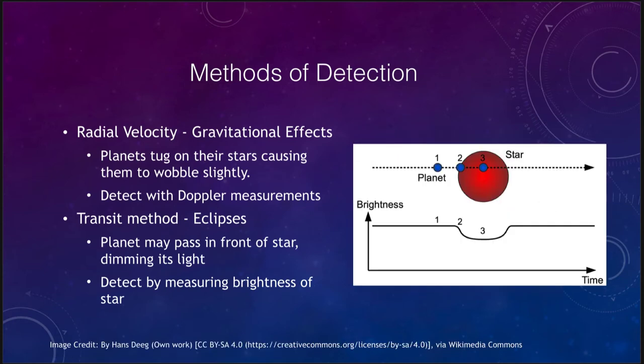The other method that we use is the transit method. And that works in cases where the planet passes in front of the star causing its light to dim. So right here at position one, the planet is separate from the star. At position two, it is just starting to block out part of the star's light. And at position three, it is blocking out the star's light, making it a little bit fainter than it otherwise would be.